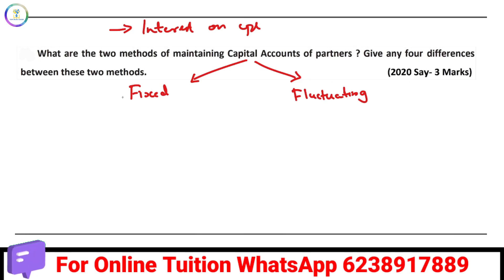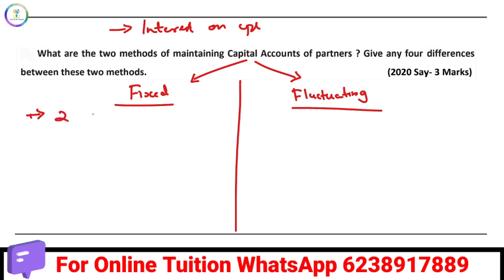The difference is this: the fixed capital method of maintaining a capital account uses two accounts — one is the partner's capital account and one is the partner's current account. If you have a fluctuating account, it is just the partner's capital account.